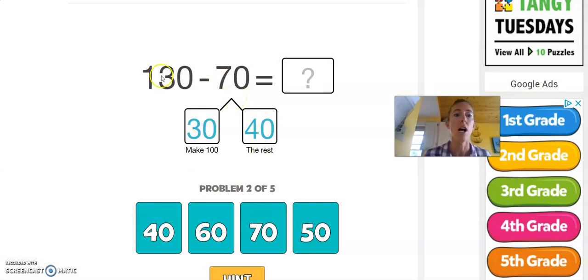130 minus 30 gets me back to 100, and then I have to jump back 40. So 100 minus 40. Well, if I have 100 and my fingers are 10s and I take off 40, I'll be left with 60 because I know 6 and 4 is 10. Cha-ching!